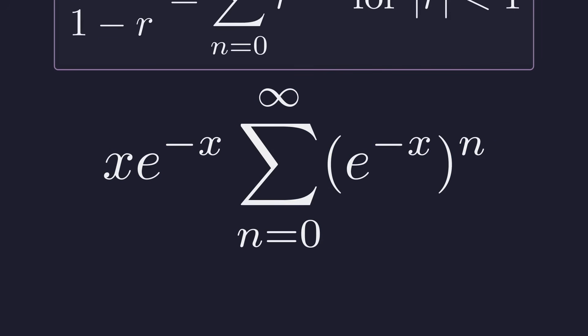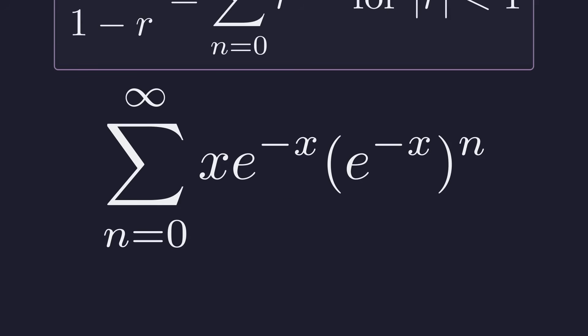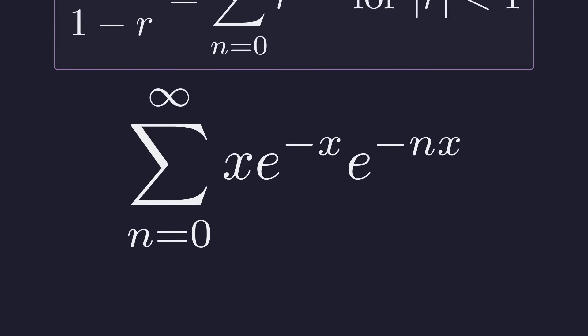Let's pull that x e to the negative x inside the sum. Now e to the negative x raised to the n is the same as e to the negative nx. Nice. We can combine these exponentials by adding their exponents. And there it is. Our original expression now equals this infinite series.